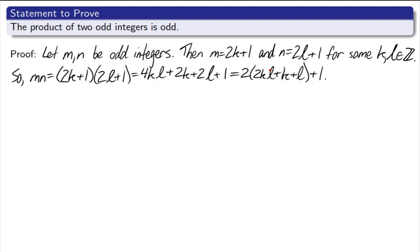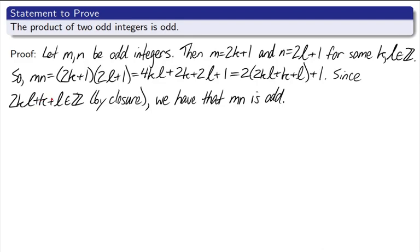The property that we usually cite is the property called closure, which basically says if you multiply two integers, you still get an integer. If you add two integers, you still get an integer. So here's how I would write this. Since 2kl plus k plus l is an element of the integers, again by closure, we have that m times n is odd. And that's the end of our proof. All we had to do was take the two numbers in such a way that they were arbitrary, but odd, and then show that their product was again something of 2 times an integer plus 1.